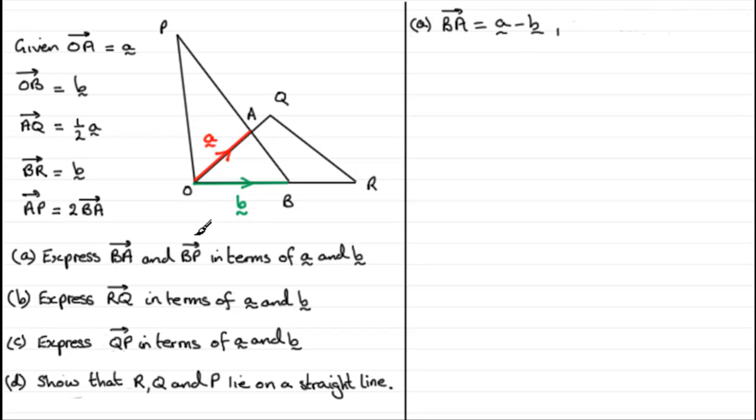Now next up we've got BP. So how are we going to get from B to P? Well BP is going to be BA followed by AP. So we'll just write that in as BA followed by AP. We know what BA is, we've just worked it out as being a minus b. But what about AP?